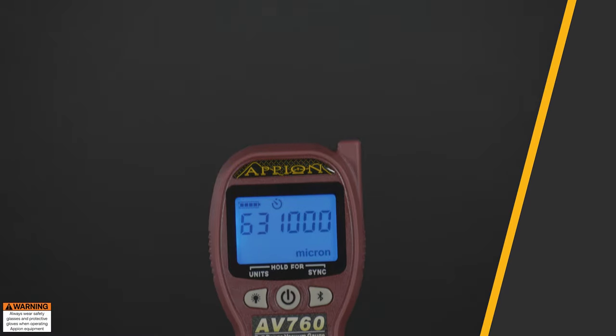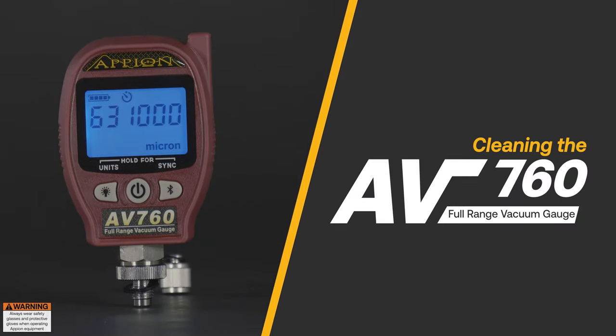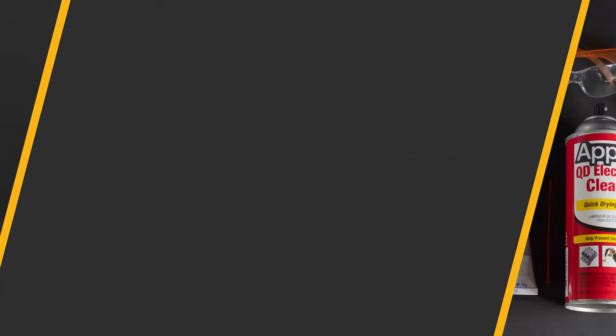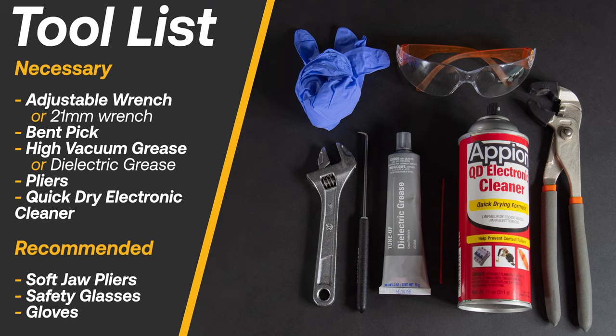If your AV760 vacuum gauge is acting erratically, you may need to perform a cleaning. Here is a list of necessary and recommended tools for a successful cleaning.